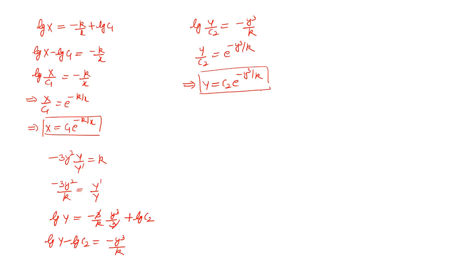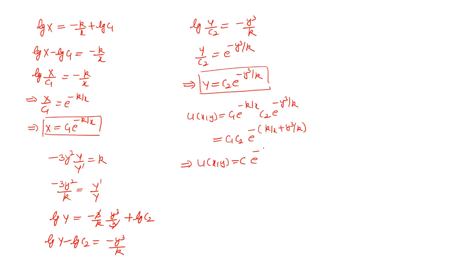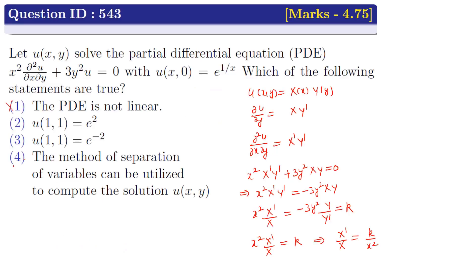Substituting X and Y back: u(x,y) = c₁·e^(−k/x) · c₂·e^(−y³/k) = c·e^(−k/x − y³/k), where c = c₁·c₂. This confirms that the variable separable technique can be used to compute the solution of this PDE. Therefore Option 4 is also correct.